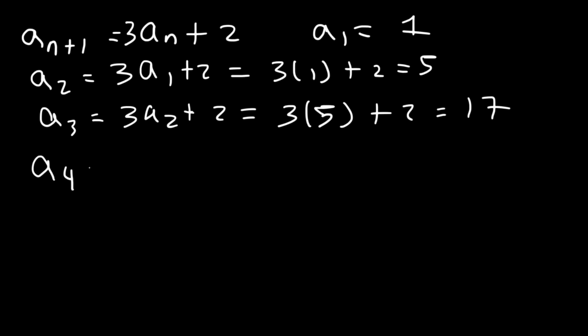Now if we want to find the fourth term, it's 3 times the third term plus 2. The third term is 17. 17 times 3 is 51, plus 2, that's 53. So that's the value of the fourth term.